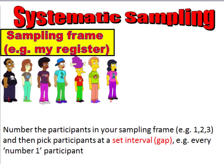So for example, we can see here that everybody is numbered 1, 2, 3, 1, 2, 3, 1, 2, 3, and so on. I could simply get a sample of a third of these respondents by selecting everybody that I've given a number 1 to.